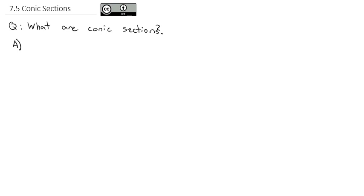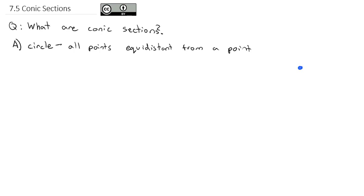There are several conic sections. The first one is the circle, and we have a very precise definition: it is all points that are equidistant from a point. So if I have a point in the center and some set distance we'll call r, no matter where that distance goes it's going to be the same. If we collect all points exactly a distance of r away from that point, we get a perfect circle with radius r.